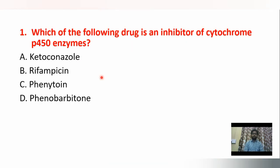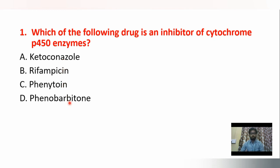The first question is: which of the following drugs is an inhibitor of cytochrome P450 enzymes? Options are: ketoconazole, rifampicin, phenytoin, phenobarbitone. Ketoconazole is the drug which inhibits microsomal enzyme cytochrome P450, whereas rifampicin, phenytoin, and phenobarbitone are microsomal enzyme inducers.